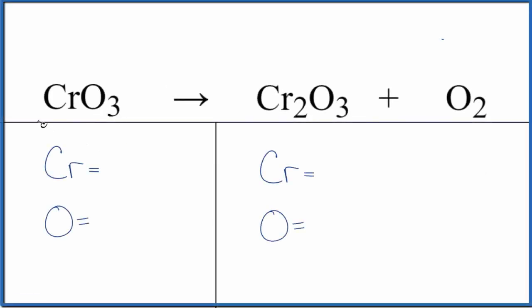Let's balance the equation for CrO3. This is chromium trioxide decomposing. So the type of reaction here is decomposition. We have one compound breaking apart into two different compounds here in the products for this equation. Type of reaction: decomposition.